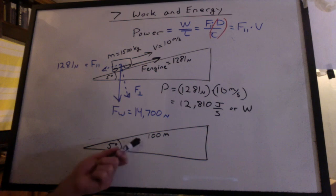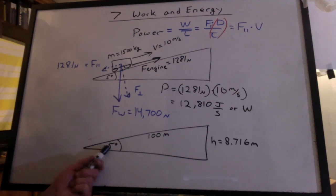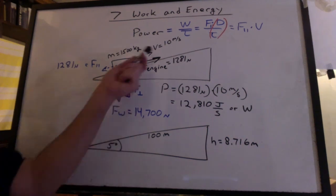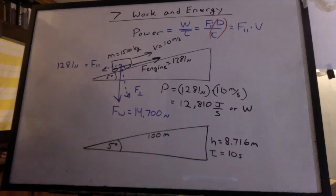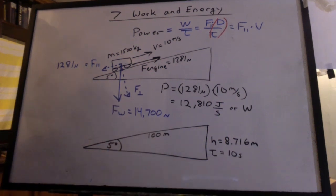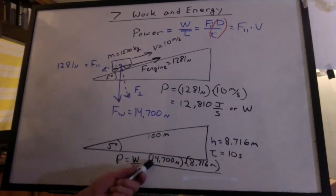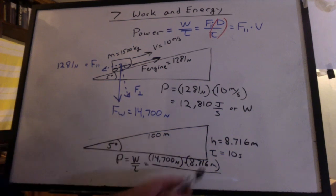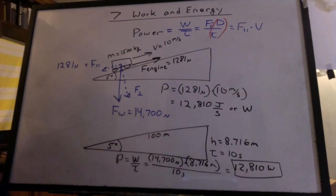Don't believe me? Fine. Let's do it the old-fashioned way. I'll pick a distance of 100 meters times the sine of 5 degrees is going to give me 8.716 meters. Now, I ask you, at 10 meters per second, how long will it take us to travel 100 meters? 10 seconds. Back to the original, power equals work per time. The work being 14,700 newtons times a height of 8.716 meters. I still get 12,810 watts if I round off to the same number of significant digits.